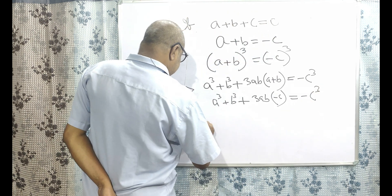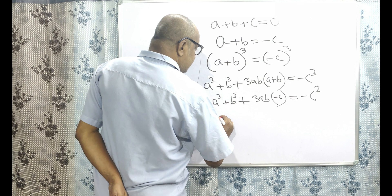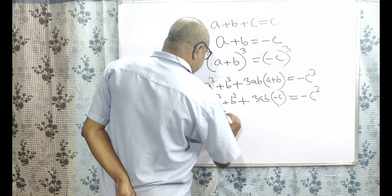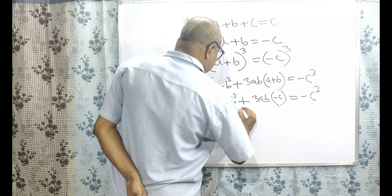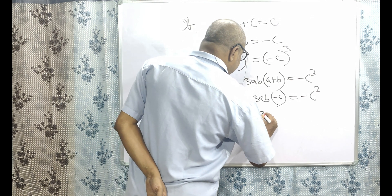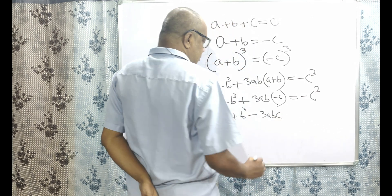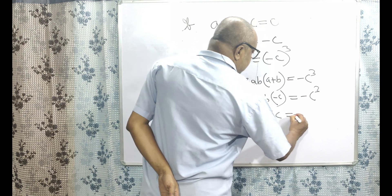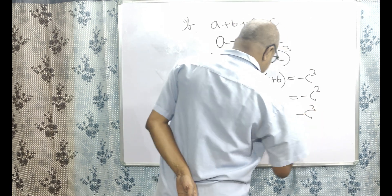So ultimately, A cubed plus B cubed plus 3ABC equals minus C cubed. Transferring minus C cubed to the left side gives us A cubed plus B cubed plus C cubed equals 3ABC.